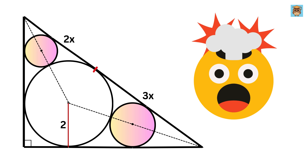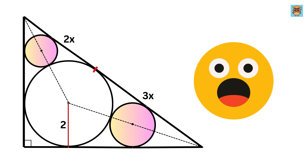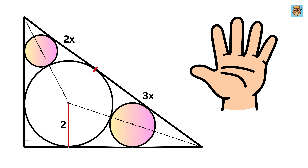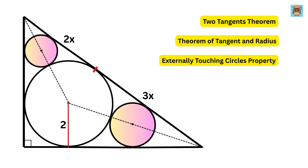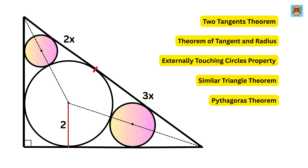This question is super amazing because we will be using five different concepts in this single problem: the two tangents theorem, theorem of tangent and radius, property of externally touching circles, similar triangle theorem, and our favorite Pythagoras theorem.